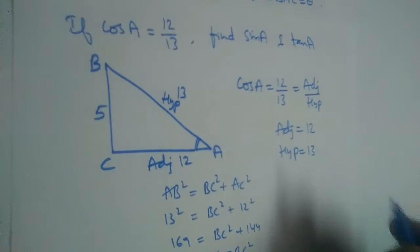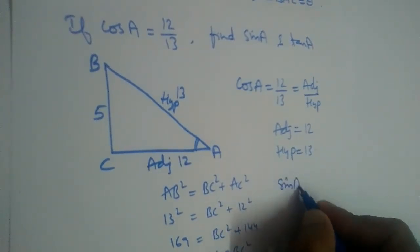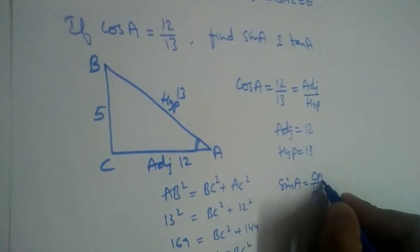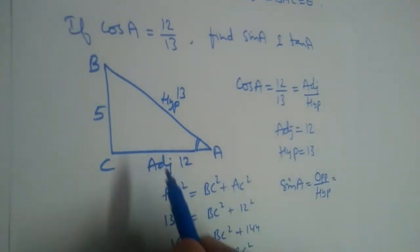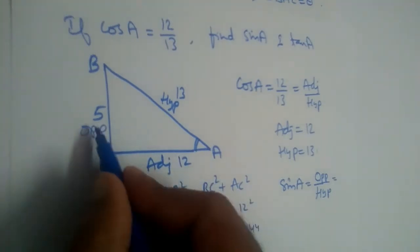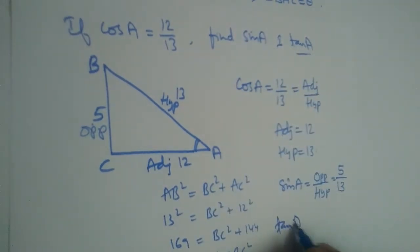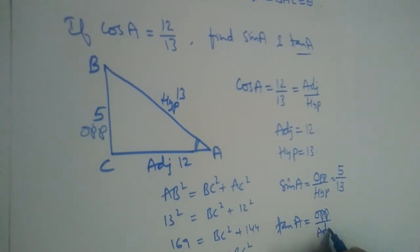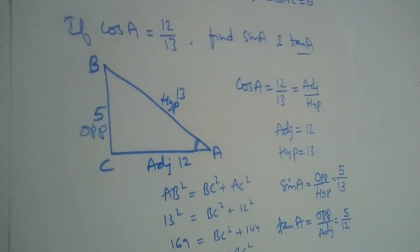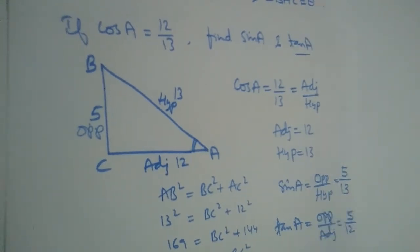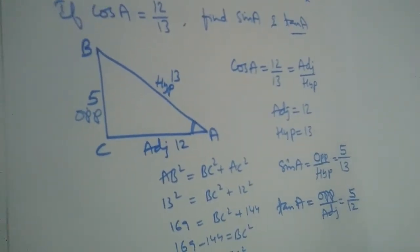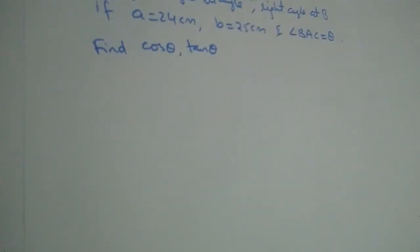Now we can find sin A. Sin is opposite by hypotenuse. The opposite side is 5, so sin A = 5 by 13. For tan, the formula is opposite by adjacent, so tan A = 5 by 12.